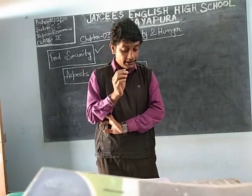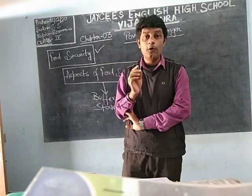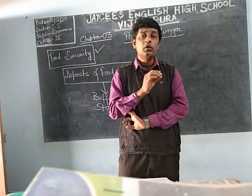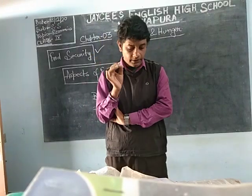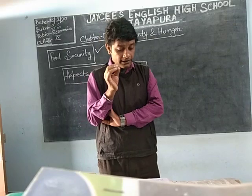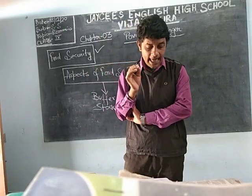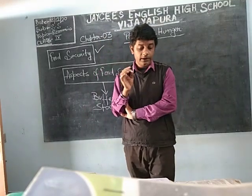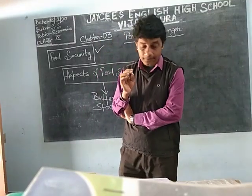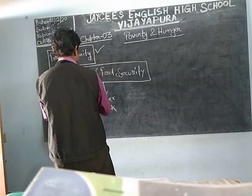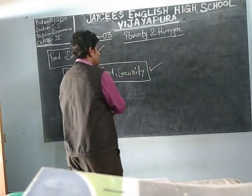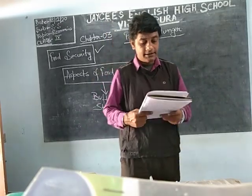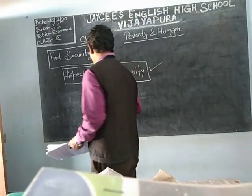Removing all other obstacles for the poor — all other obstacles are also there, since food is not distributed evenly, those things should get omitted. So, removing other obstacles for the poor while accessing and absorbing food. Now we will go for the aspects of food security. What are the aspects of food security? How can we control food security? The first aspect is the buffer stock.